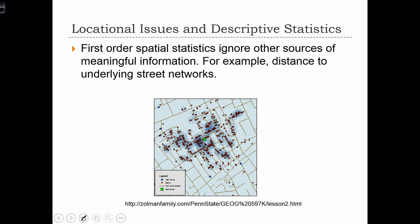And finally, everything that we've covered so far can be considered first-order spatial statistics. And remember, these first-order spatial statistics have to do with the absolute locations of points in the data set. They ignore other sources of meaningful information, for example, the distance of points to the underlying street network.